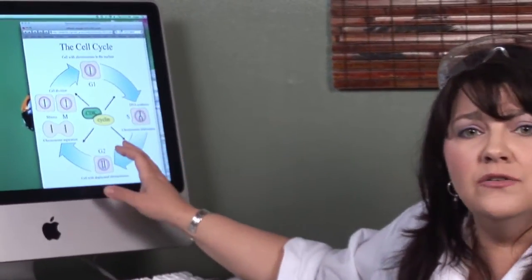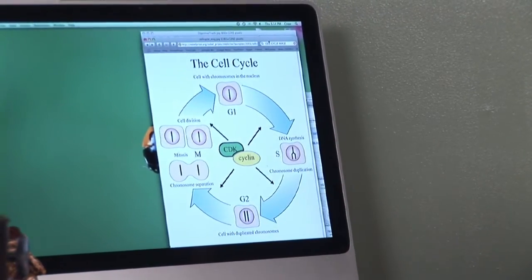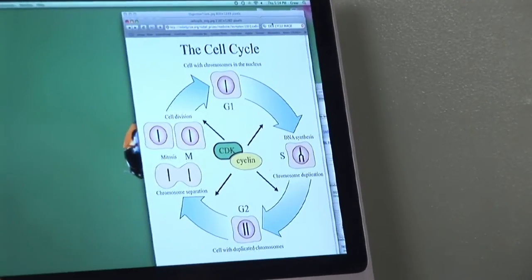I'll show you. It's called the cell cycle. The cell cycle is a series of events that the cell goes through to reproduce more cells. You have to do that in order to grow hair, heal a cut, or even to get taller.